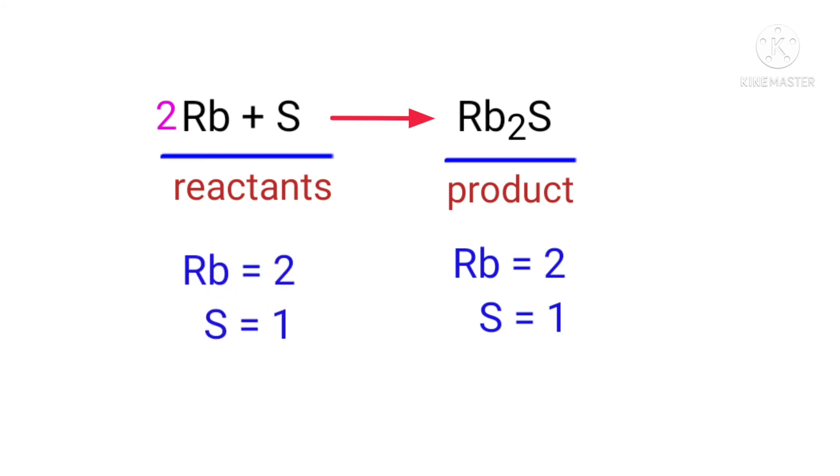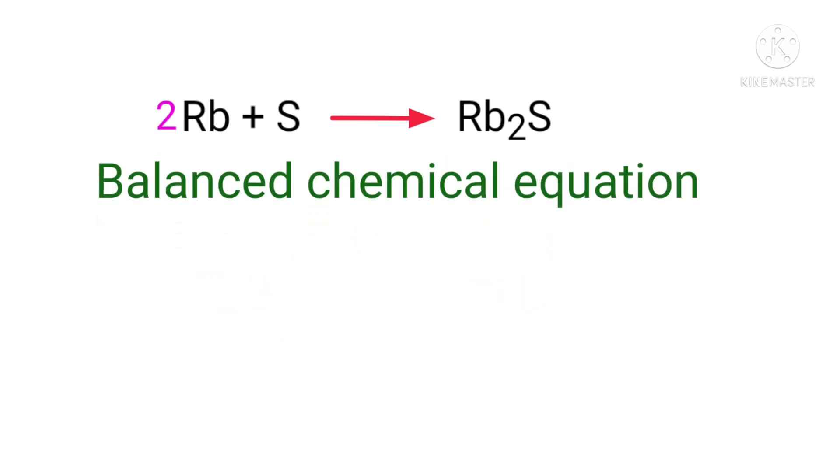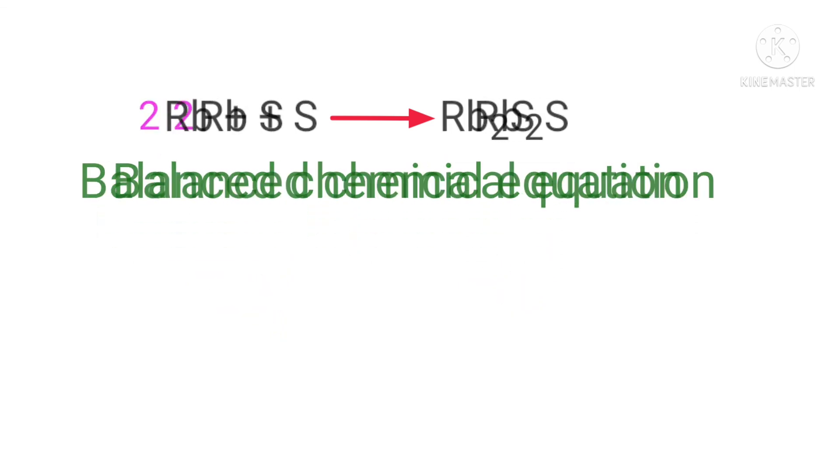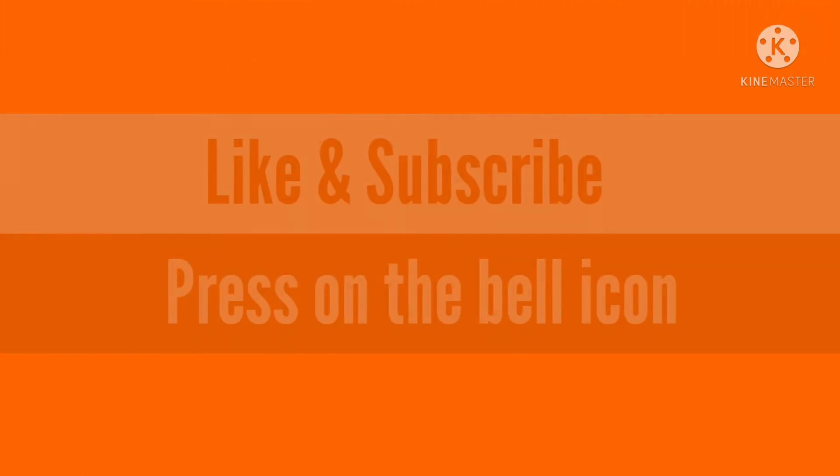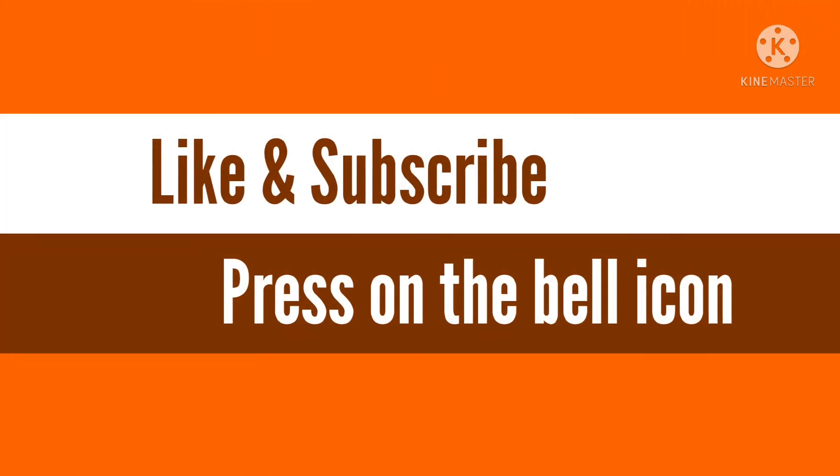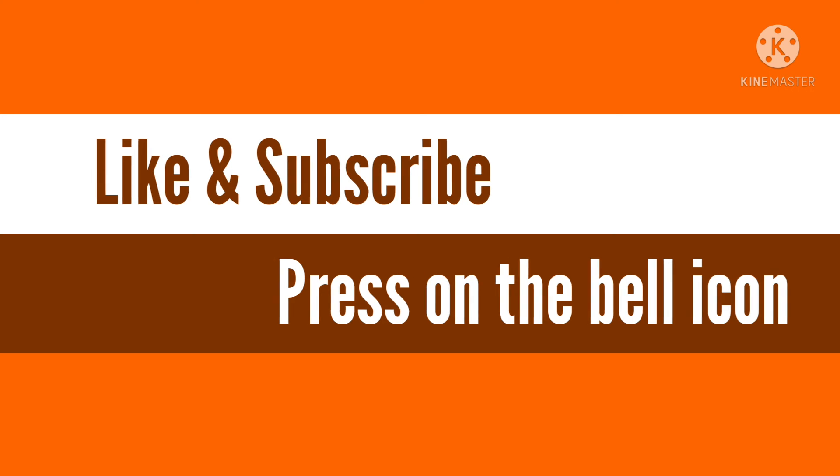The equation is now balanced. There are two rubidium atoms and one sulfur atom on both sides. If you like this video, please subscribe to my channel and press on the bell icon.